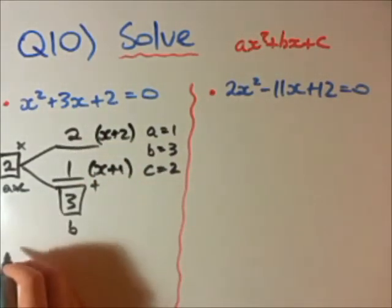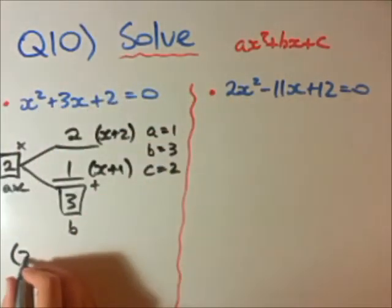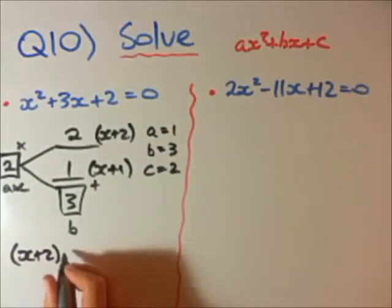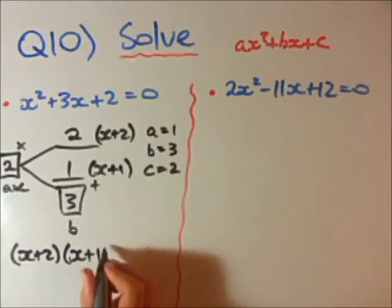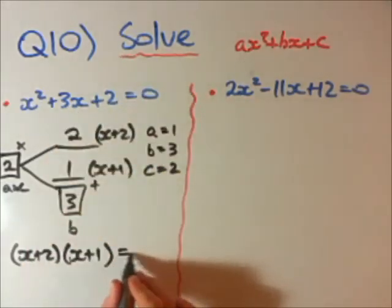Now, we can rewrite our original equation with x plus 2, x plus 1. And, we factorized it. Equals 0.